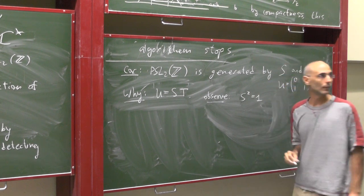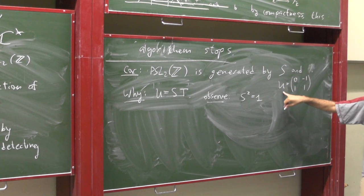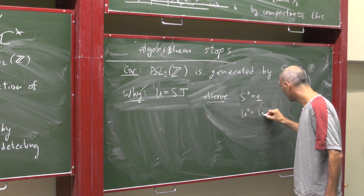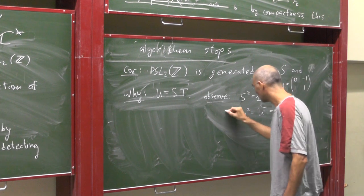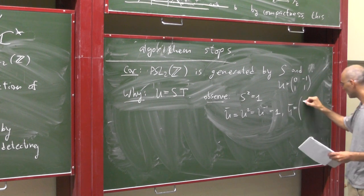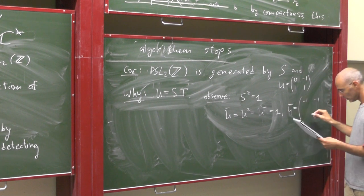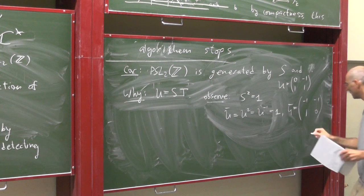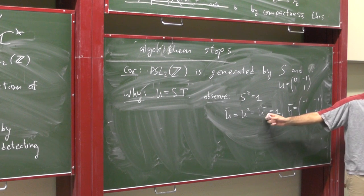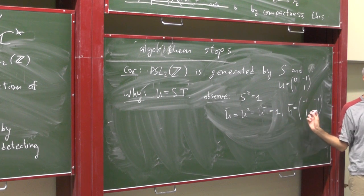Observe S squared is 1, and U with the computation is of order 3. U squared is U inverse. And precisely, please recall that we are working modulo the center, modulo negative 1. So U cubed will not be 1 actually in matrix form, it reminds me.